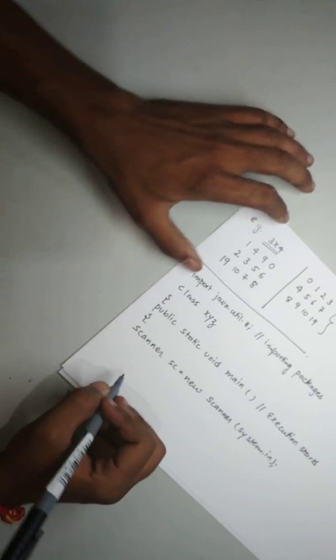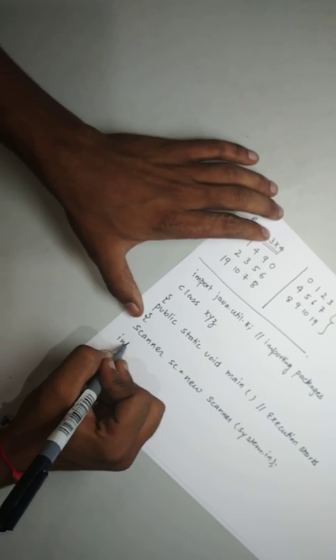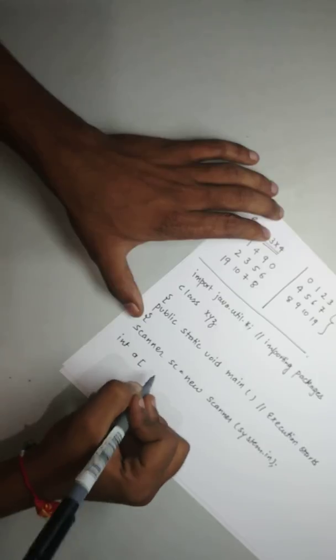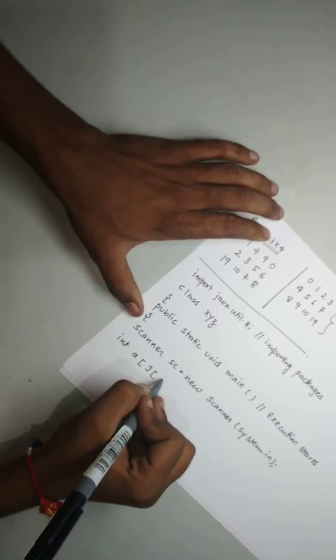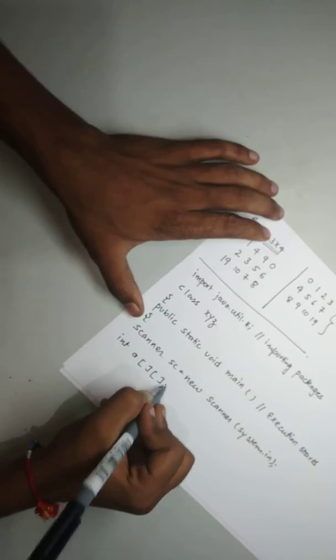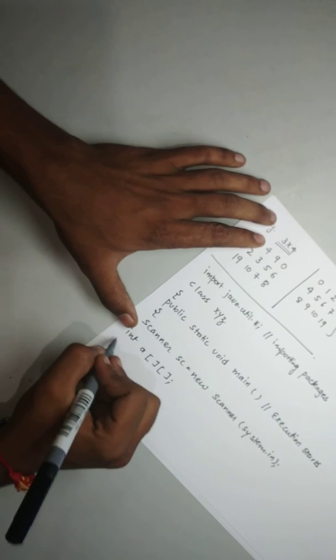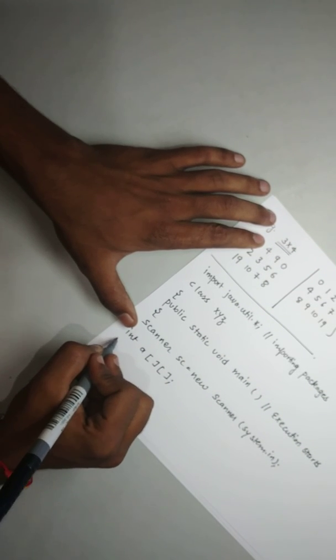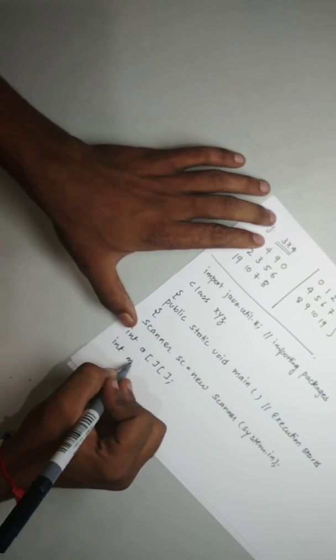After that declare the array we can say a of. First of all we have declared the array with unknown size. After that take two variables m, n.